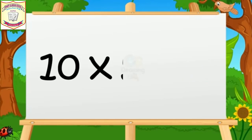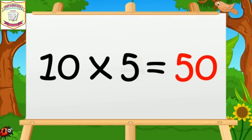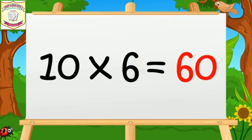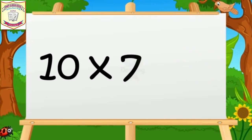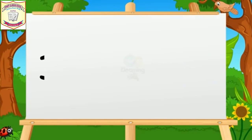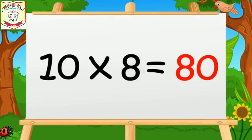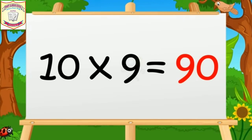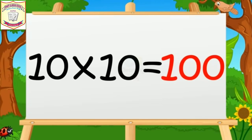Ten fives are fifty. Ten sixes are sixty. Ten sevens are seventy. Ten eights are eighty. Ten nines are ninety. Ten tens are one hundred.